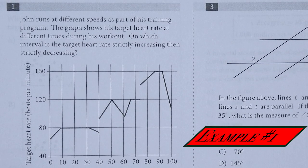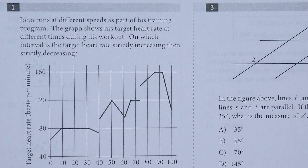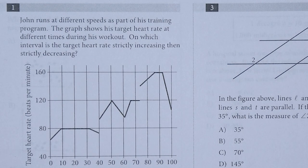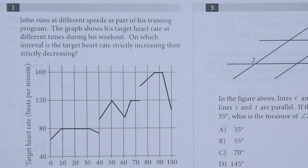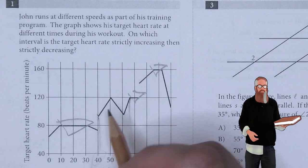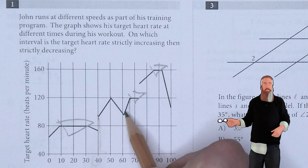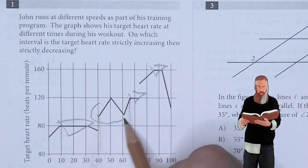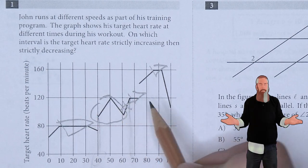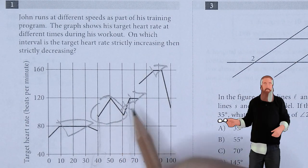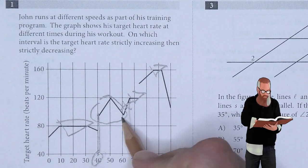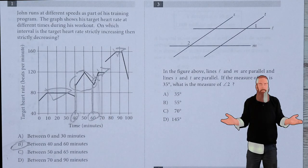John runs at different speeds as part of his training program. The graph shows his target heart rate at different times during his workout. On which interval is the target heart rate strictly increasing, then strictly decreasing? All I care about is seeing the increase, then the decrease, no other changes. We're looking at going from 40 to 60, which means B is the answer.